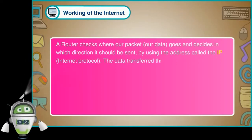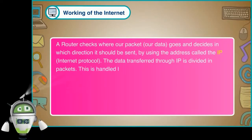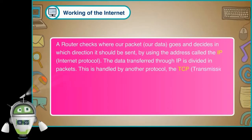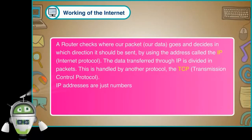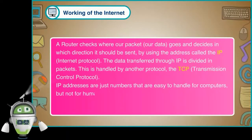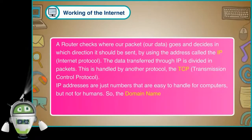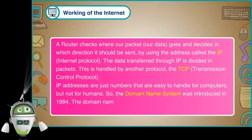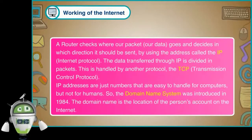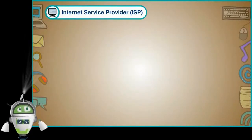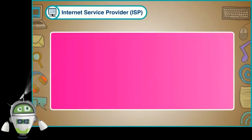The data transferred through IP is divided into packets. This is handled by another protocol, the TCP, Transmission Control Protocol. IP addresses are just numbers that are easy to handle for computers, but not for humans. So the domain name system was introduced in 1984. The domain name is the location of the person's account on the internet.